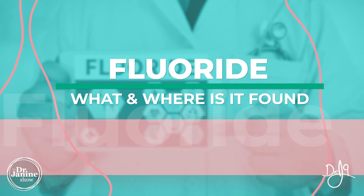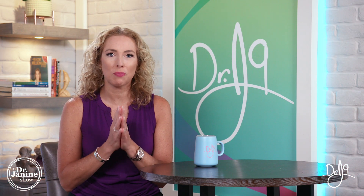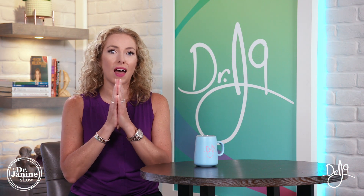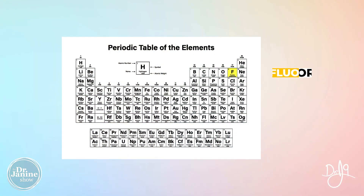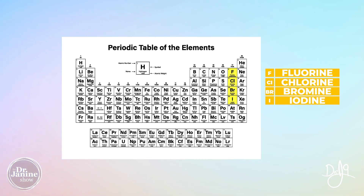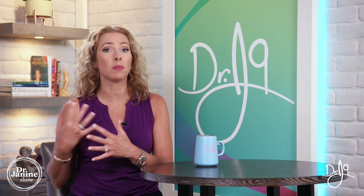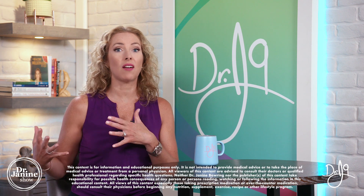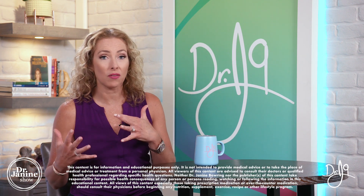Fluoride, if you remember on the periodic table, it's part of the halogen group, with the atomic number of nine and the symbol F for fluorine. It is a pure gas and it is the most reactive and electronegative of all the elements, which becomes very important when we talk about the biochemistry and how this is having negative impacts on our health.